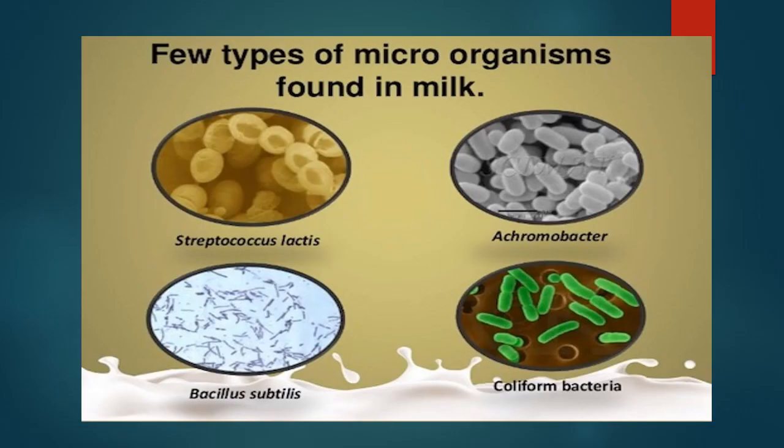As already mentioned, the main reason for spoilage is microbes, so whenever we talk about spoilage of food, microbial spoilage is the most important aspect in milk and milk products. Some of the common undesirable microorganisms include Streptococcus lactis, Acromobacter, Bacillus subtilis, and the Coliform group of bacteria, among many others we will see in specific organisms involved in spoilage of different dairy products.